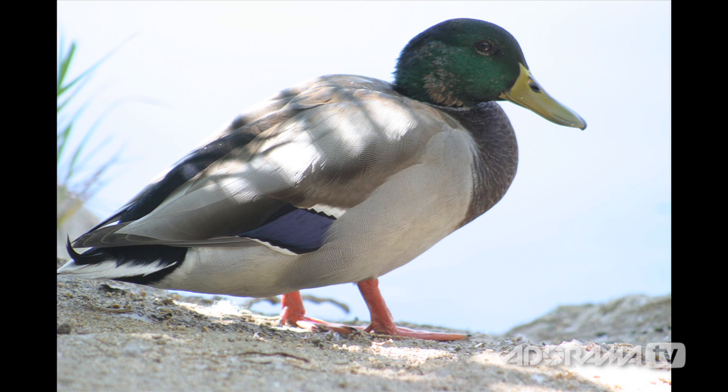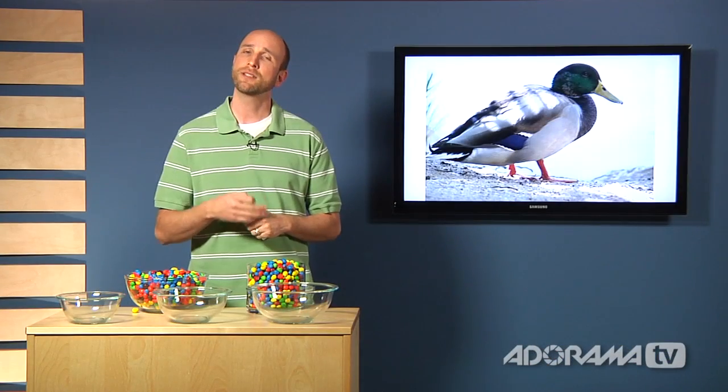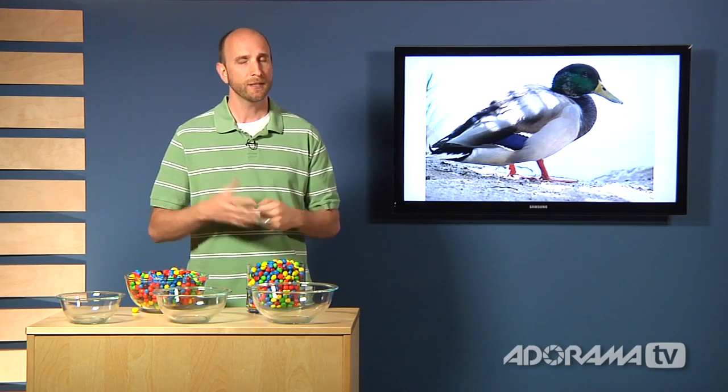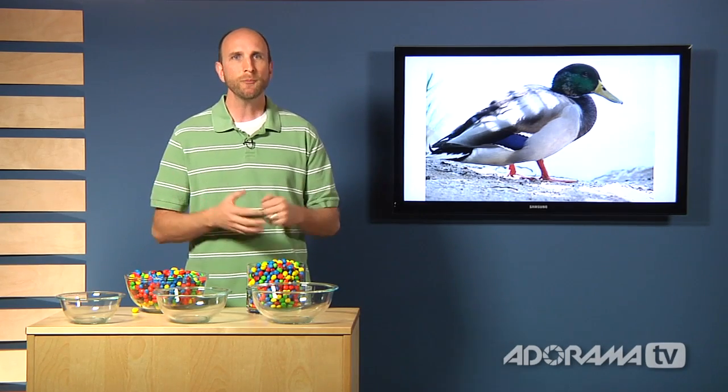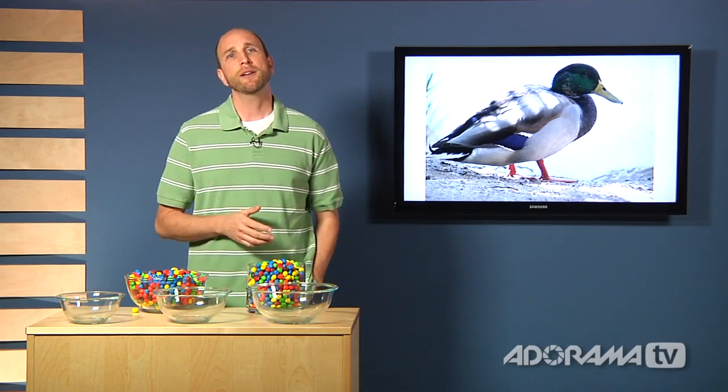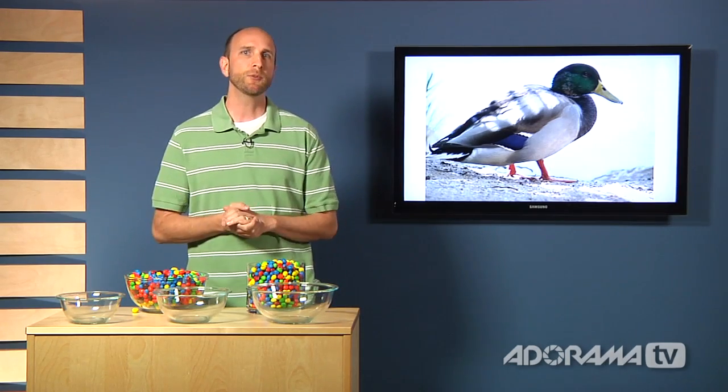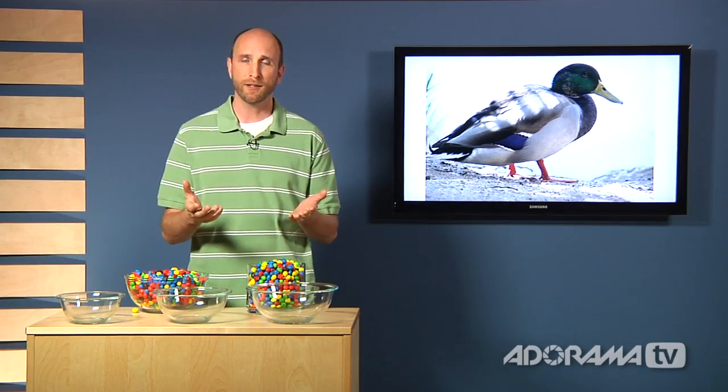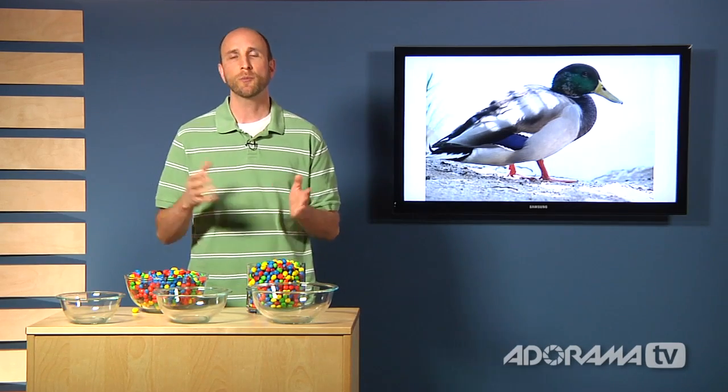Here's another example of an image that has dynamic range problems. This duck here, the duck is exposed correctly, but the camera's dynamic range was too small to capture any of the detail in the sky because it was too bright. Now that we know a little bit about dynamic range and what it is, let me explain how your camera's sensor works, and then we'll talk about ways that we can manage our dynamic range to get a little bit more pleasing images.